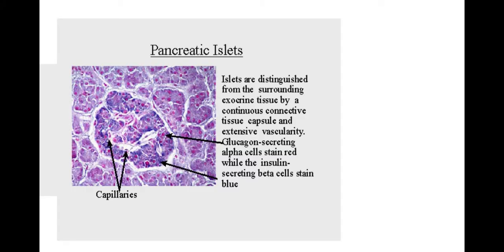You're more likely to get an image like this in your exam where you're asked to identify the islets of Langerhans. In this image you can see the cells are stained a certain colour depending on which cell it is. The cells that create glucagon are stained red, and the beta cells that make insulin are stained blue in this particular image. The staining details should be listed in the actual question if it's asking you to use a certain stain to identify certain cells.